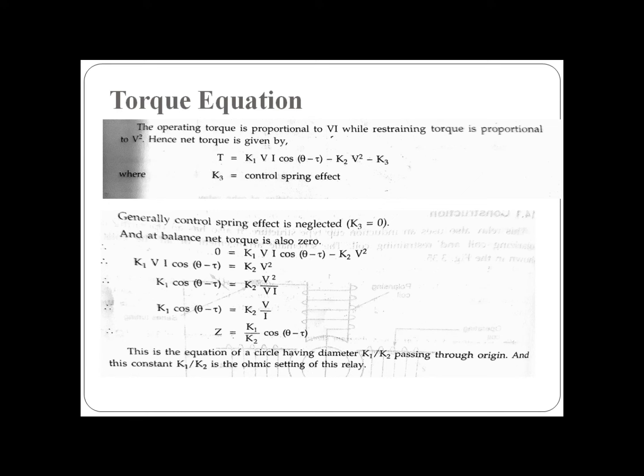So basically, what you have in Mho relay is that the operating torque is the product of voltage and current, and the restraining torque is proportional to the square of the voltage. One torque produces K₂V², and the other torque produces VI cos(θ - τ).